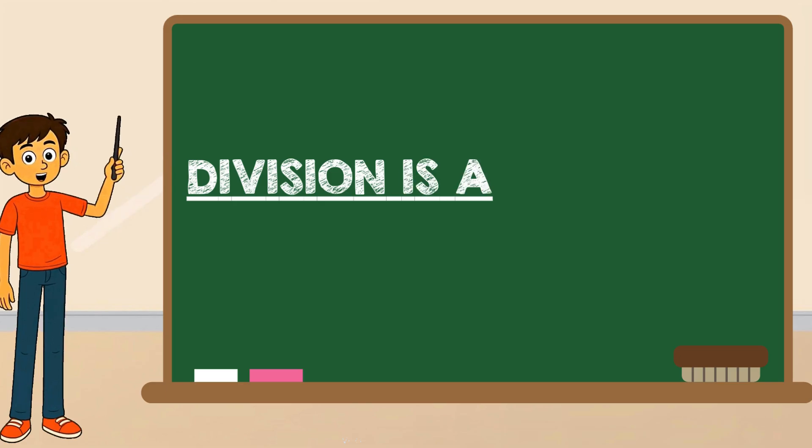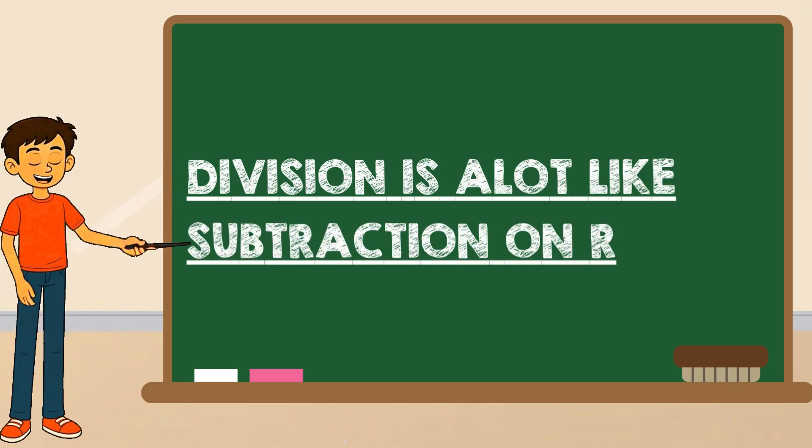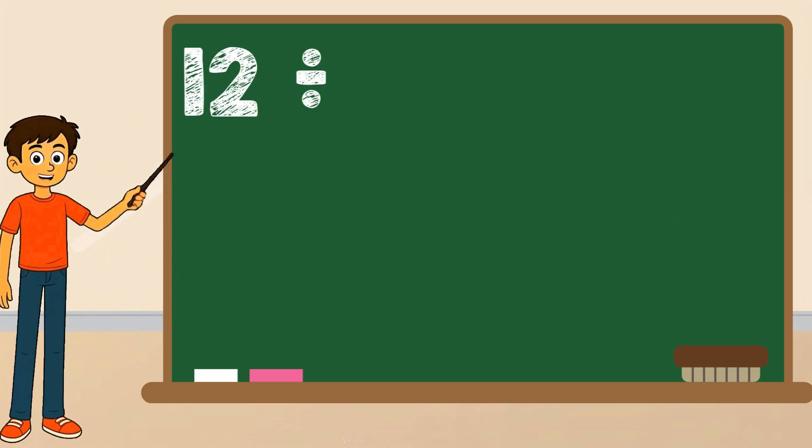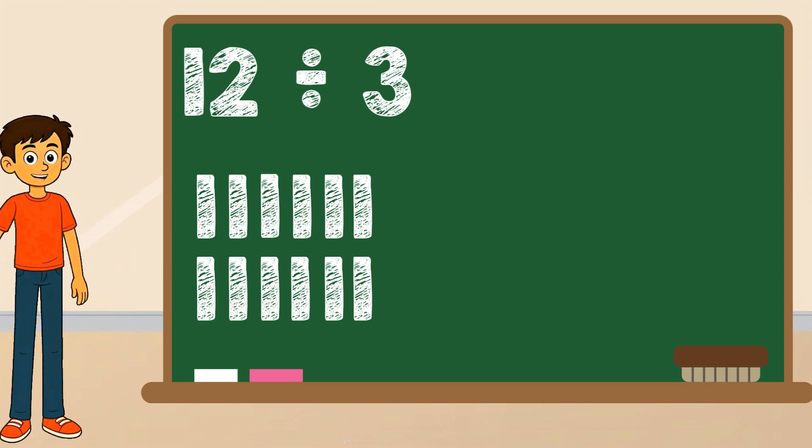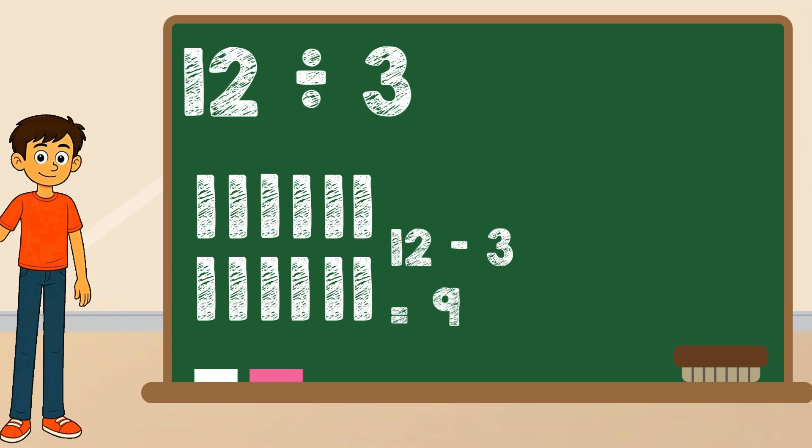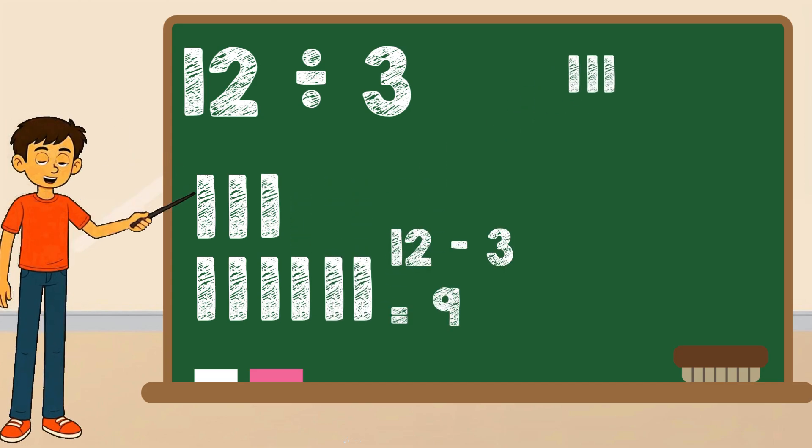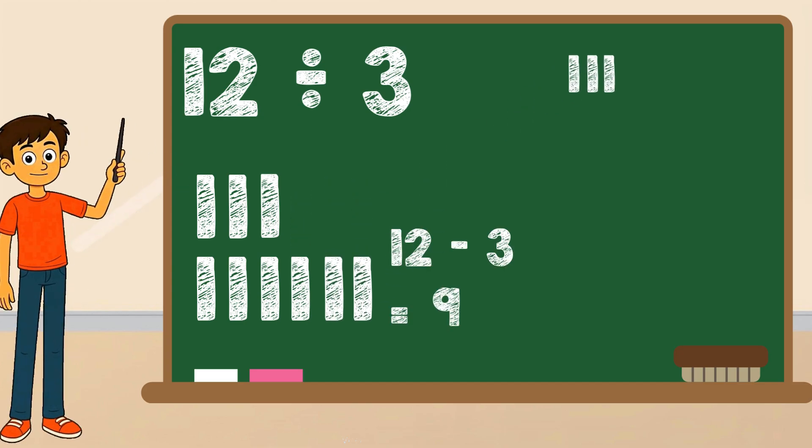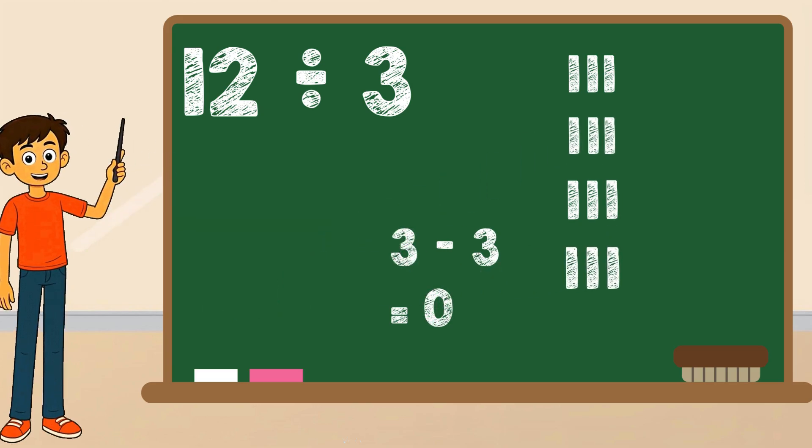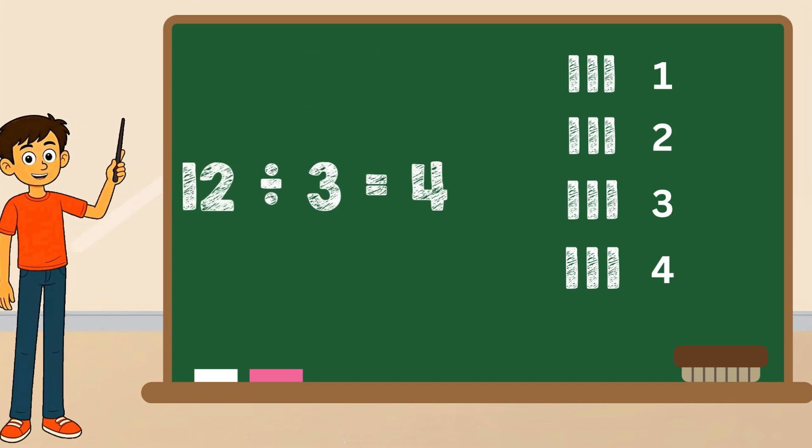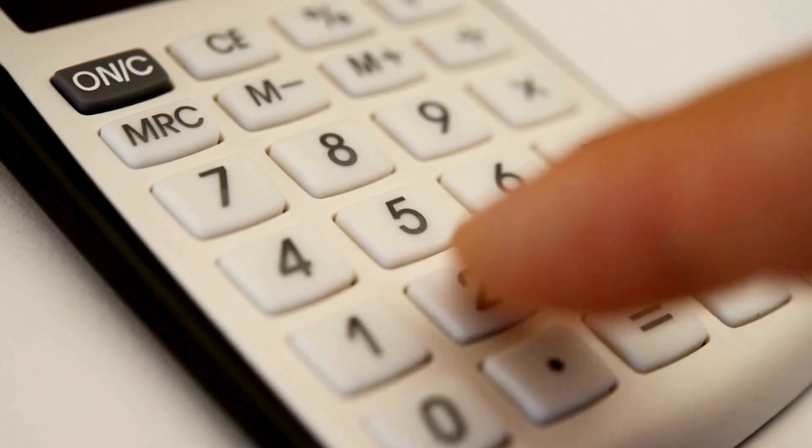Division is also a lot like subtraction on repeat. Think of twelve divided by three. If you keep taking away three until you hit zero, you'll see the pattern. Twelve minus three is nine. Nine minus three is six. Six minus three is three. Three minus three is zero. You subtracted four times. That means twelve divided by three equals four. Division is really just fast repeated subtraction.